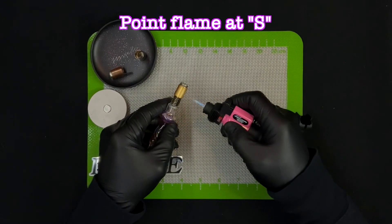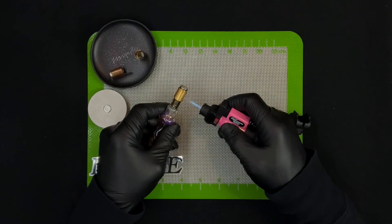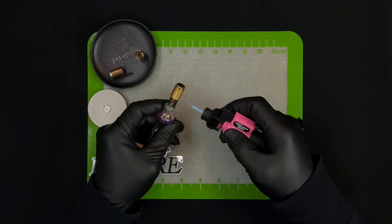Alright, get my single torch. And you want to just point it right at the S, put the S right at the tip of the flame and just hold it there. No need to spin and you just wait for the clicks.